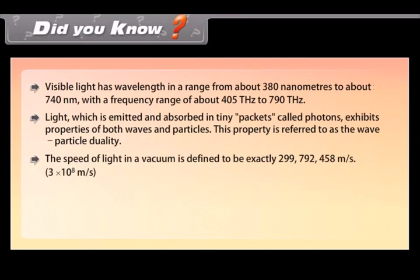The speed of light in a vacuum is defined to be exactly 29 crores, 97 lakhs, 92,458 meters per second. That is 3 times 10 raised to the power 8 meters per second.